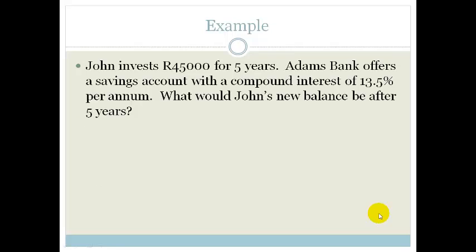So let's do an example to make sure you understand that. John invests 45,000 Rand for 5 years. Adam's Bank offers him a savings account with compound interest of 13.5% per annum. What would John's new balance be after 5 years? The formula is A = P(1 + i)^n.